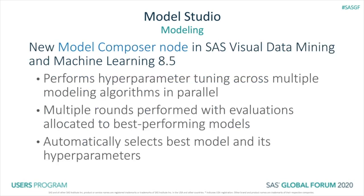In this new supervised learning node in Model Studio, you can auto-tune various model types in parallel and perform multiple rounds of auto-tuning. This means after the first round where auto-tuning evaluations are equally allocated, subsequent rounds allocate more evaluations to the best performing model type. At the end of the rounds, the overall best model for your data and its optimal set of hyperparameters, also specific to your data, are used for training. The model selection is intrinsically and automatically performed for you as well.